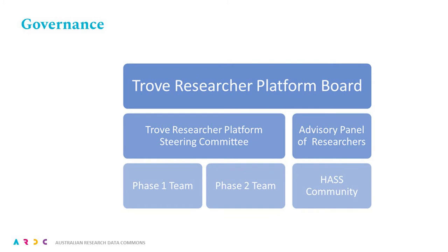There will be two teams: the first to progress phase one of the project, consulting with the research community, and the second will implement the requirements identified in phase one, developing the functionality behind the Trove Researcher Portal. In addition, the Trove Strategic Advisory Committee and the Trove Partners will be kept informed on the project. The membership of the three key committees will include broad participation from the lead institutions as well as the wider research community.